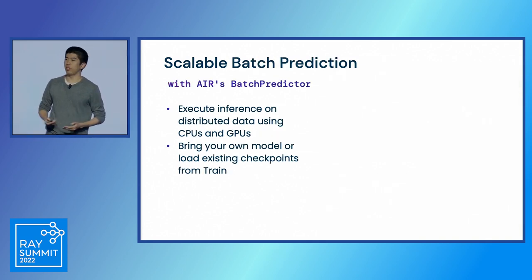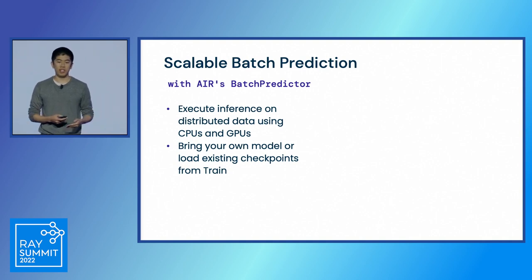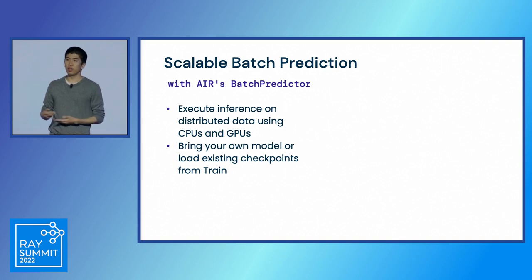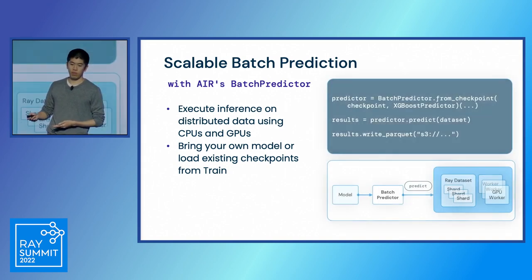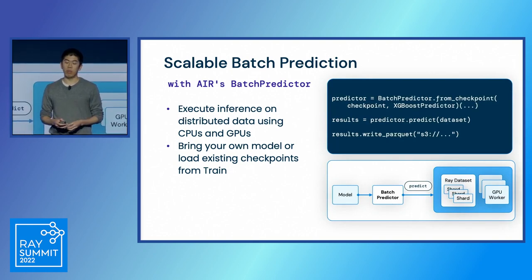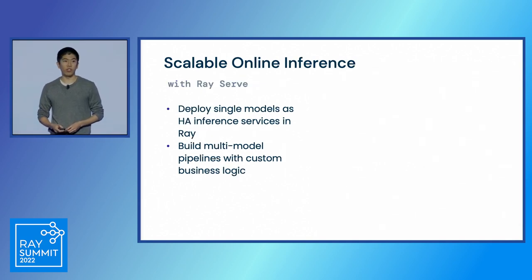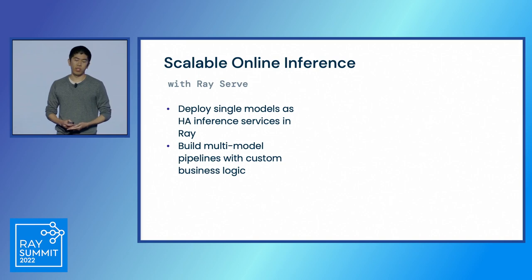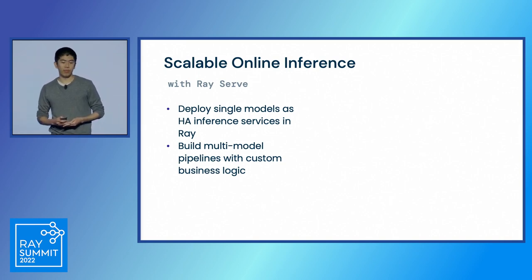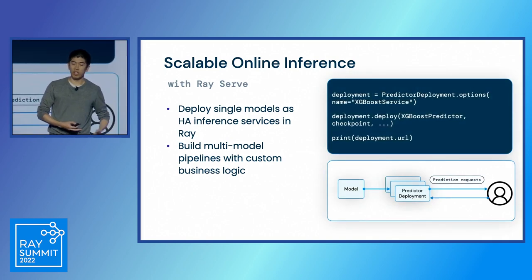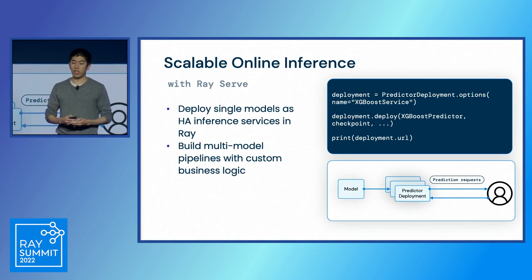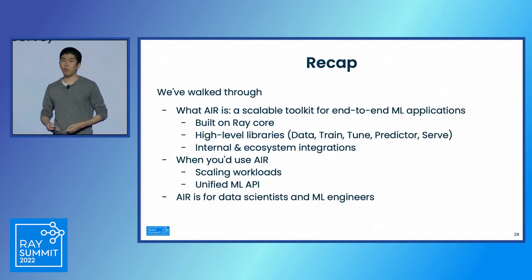Air also includes a batch prediction utility. Batch Predictor lets you execute inference on distributed datasets using CPUs and GPUs. You can bring your own model or load existing checkpoints from Train. Here's a simple example: create a predictor from an XGBoost checkpoint, call predict on a Ray dataset, and write the results back to storage. Finally, Ray Serve lets you deploy models as highly available inference services. You can also build multi-model pipelines with custom business logic using Serve's new deployment graph feature, and you can load a checkpoint into a Serve deployment with just one line of code.